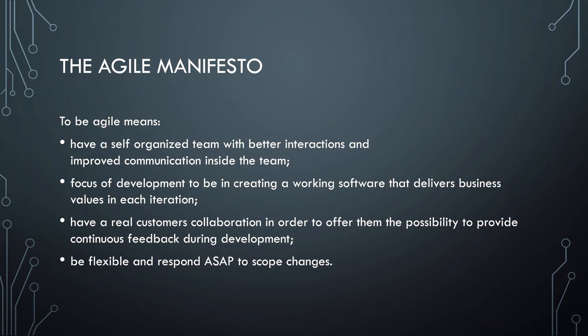There are a few principles behind Agile processes. The team organizes itself to improve communication and interaction. The aim is to regularly deliver working software, preferably every few weeks, minimally every few months. Working products are the most important measure of progress. The customer is integrated in the process to provide feedback, and Agile welcomes change, even late in the process.